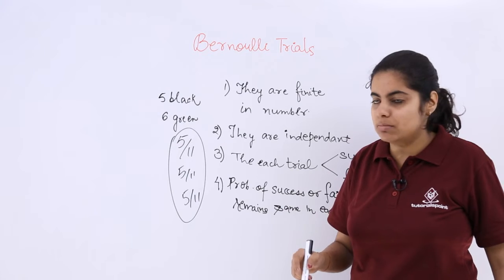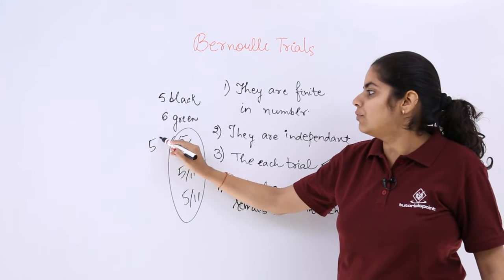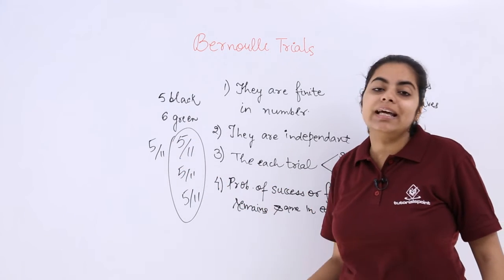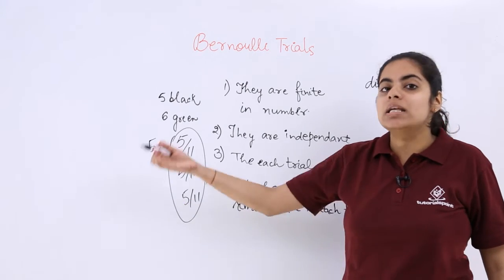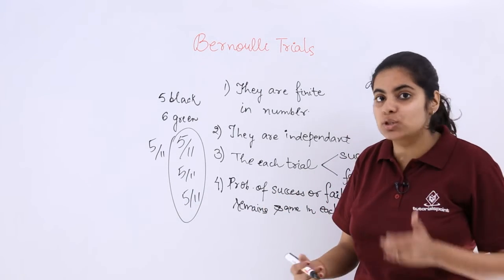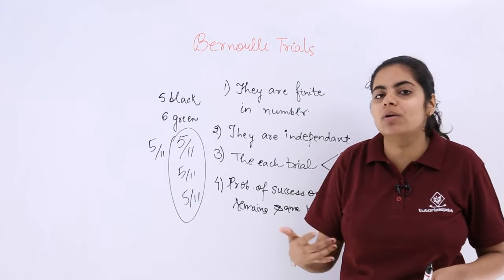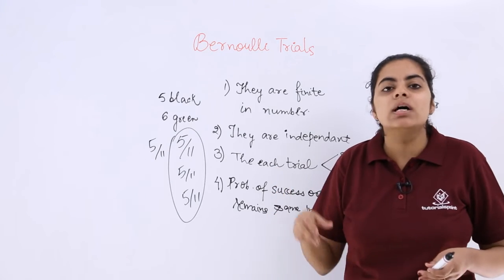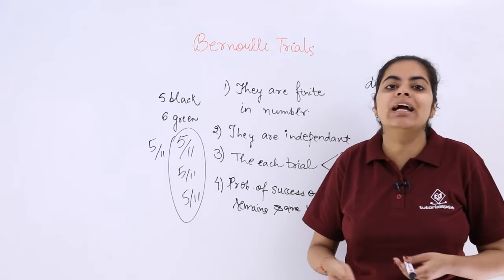But if it is without replacement, so first time it will be 5 over 11. The second time it will change to some other number. Then the third time to some other number because the number of balls are not being replaced. So the number of balls in totality are becoming less.